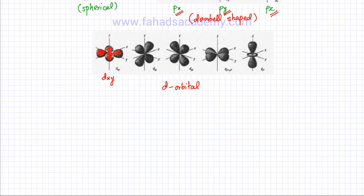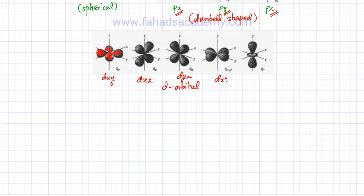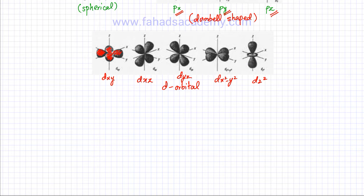Similarly, there is a Dxz orbital, then the Dyz orbital, then the Dx²-y² orbital, and then the Dz² orbital. These are five different orbitals — five different versions of the D-orbital. The electron would be in these flower-shaped regions. The Dz² orbital has a different shape. If an electron is in either of these orbitals, you can look at the shape and figure out where there's going to be a very high probability of finding that electron.